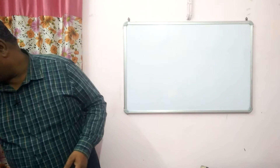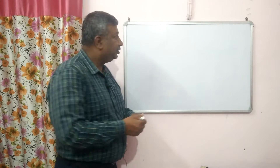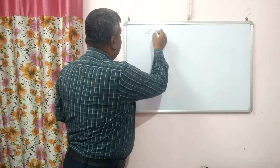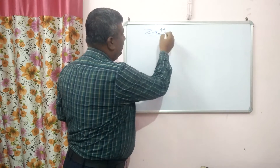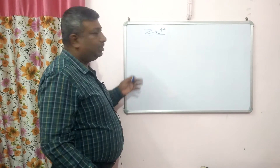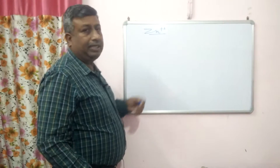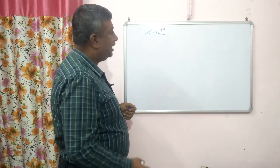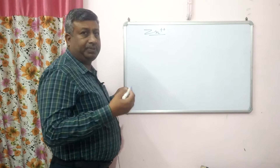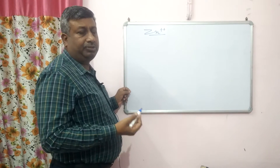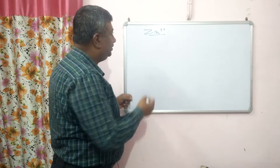In this lecture, I will tell you about zinc — how zinc availability is affected by soil pH. The available form of zinc is the divalent cation Zn²⁺, and zinc is present in soil solution in many hydrolysis species.